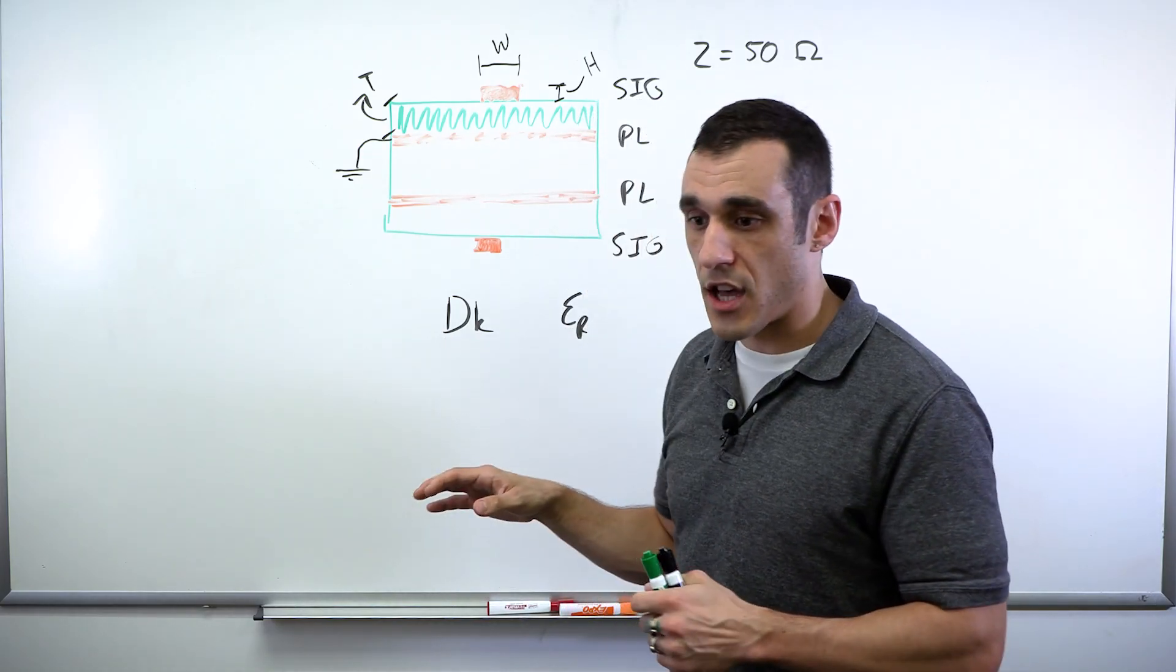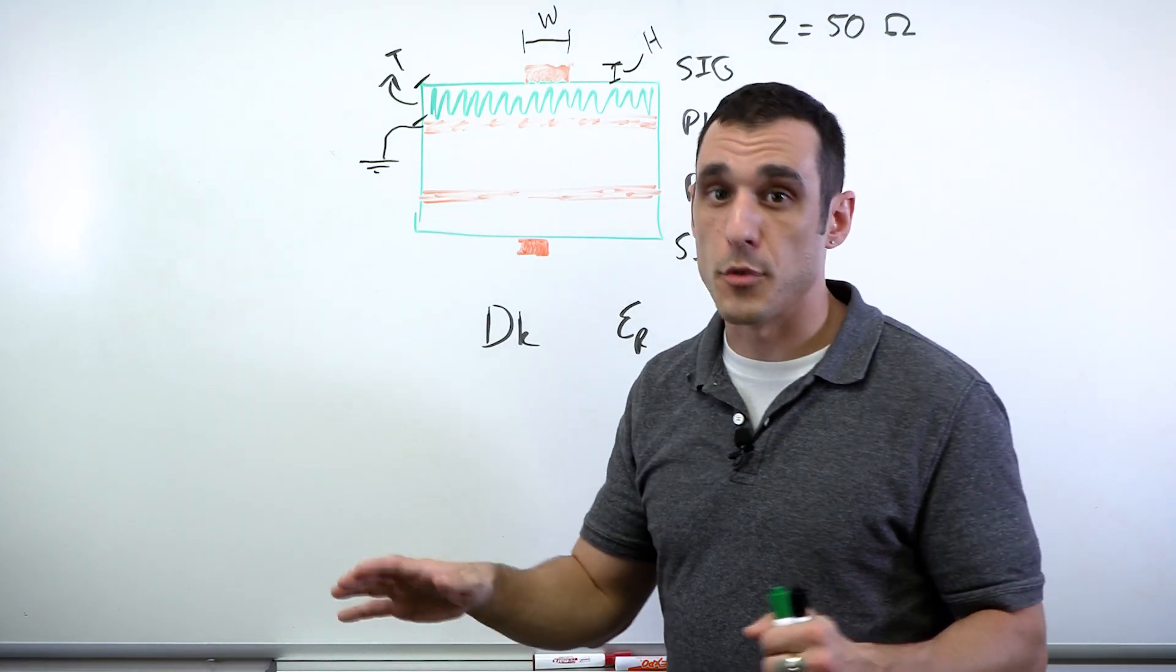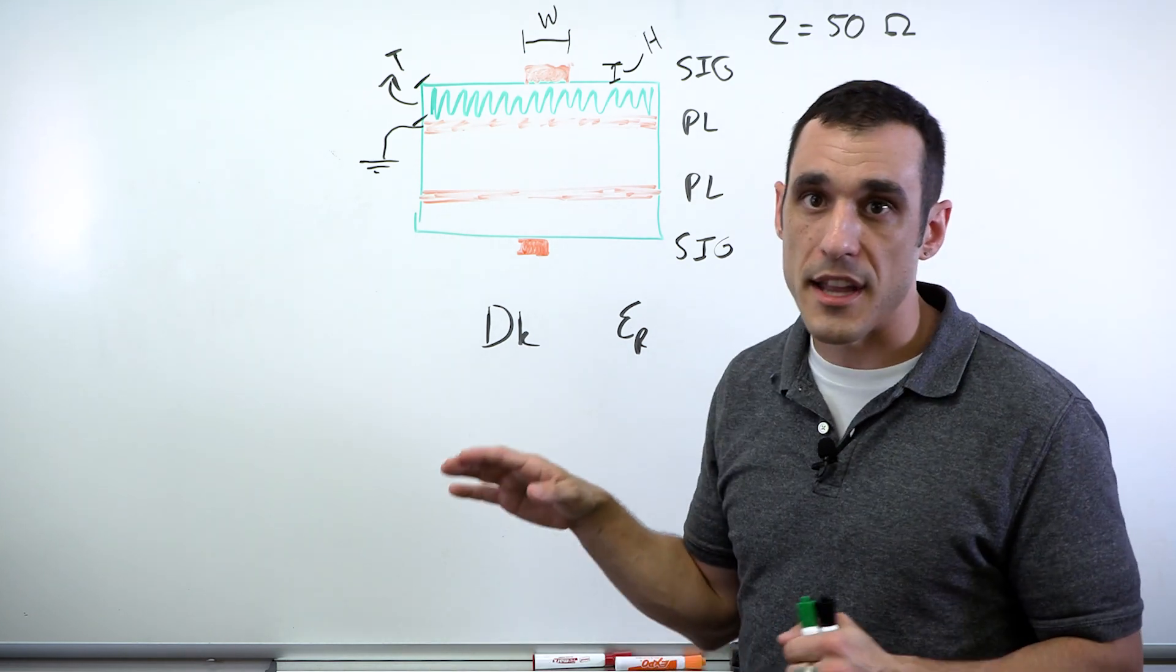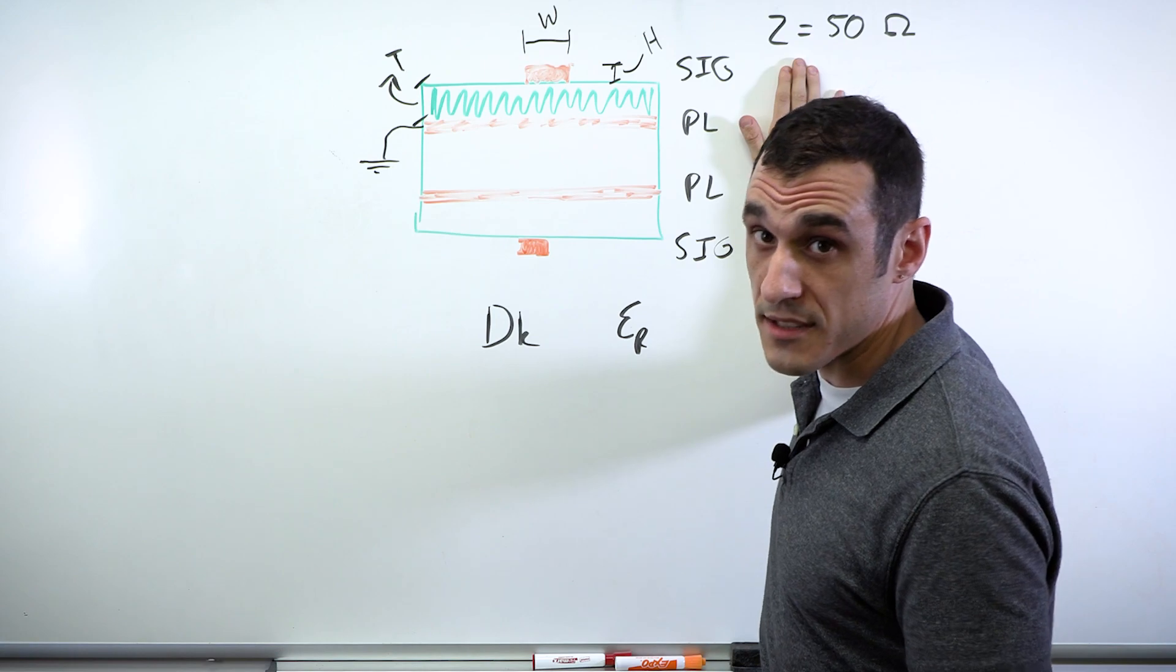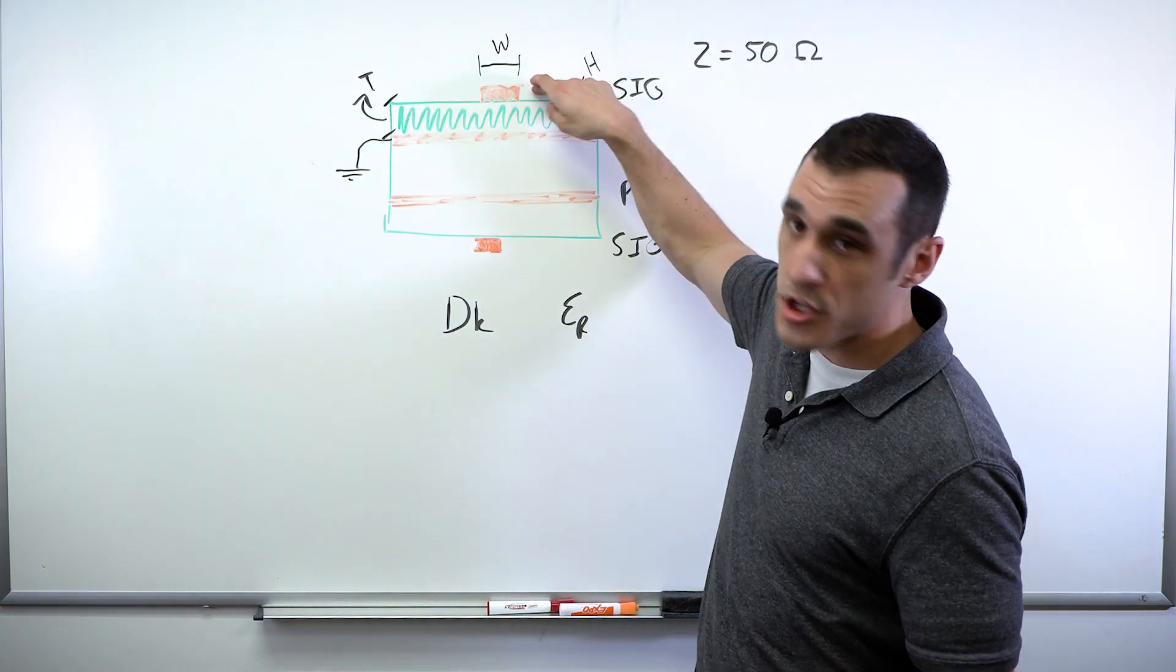That textbook is available online. We've got a link to it below in the description. Go get that textbook if you want to be an interconnect designer and you want to learn a lot more about transmission line theory. And specifically, if you want to see a bunch of formulas for different trace impedances. That particular textbook has a formula for this arrangement here.